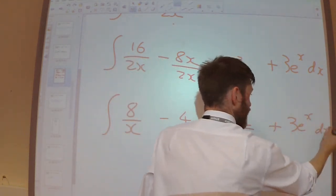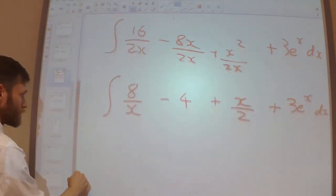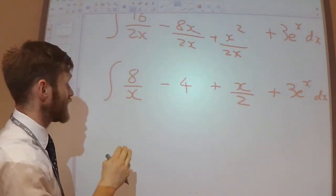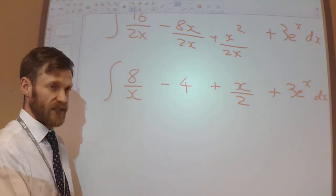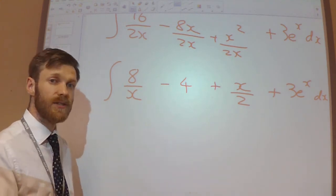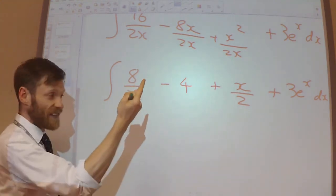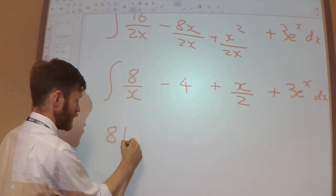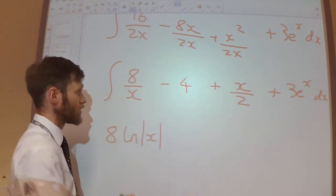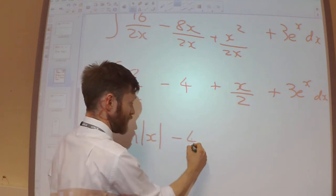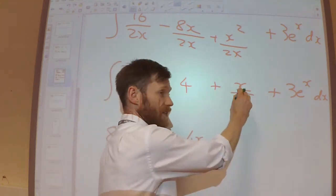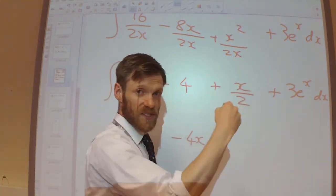And now we're ready to integrate the 8 over x. Well, I know that 1 over x integrates to be ln x. And here I've got 8 of them. So that would be 8 ln x.